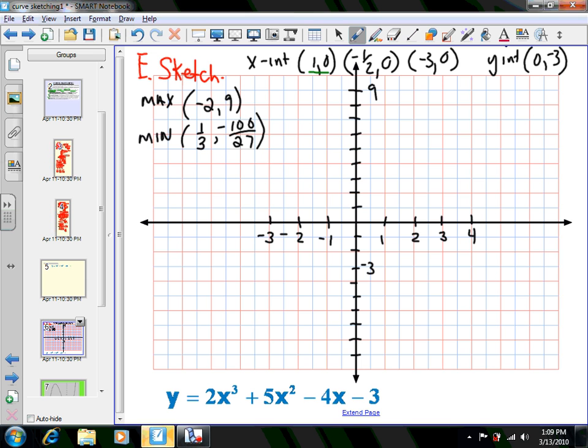We'll start with our x-intercept of (1, 0)—there's one dot. X of -1/2, 0—there's another one. And x of -3, 0. So those should be my x-intercepts.